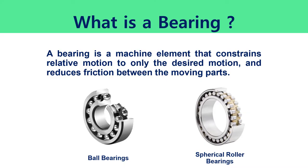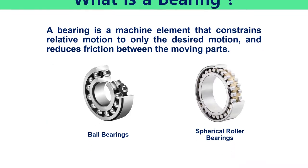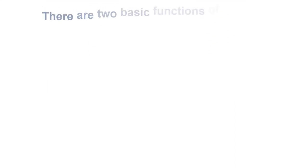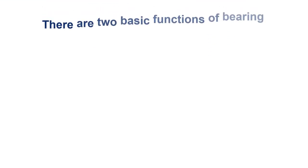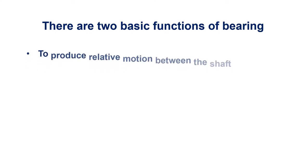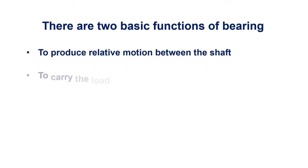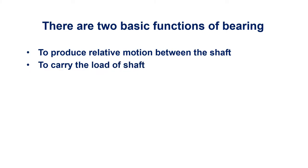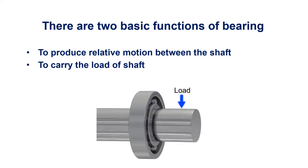Now here comes the question of why we use bearings. There are two basic functions of a bearing: to produce relative motion between the shaft and to carry the load of the shaft. As shown in the example, the bearing both produces motion and carries the load of the shaft.